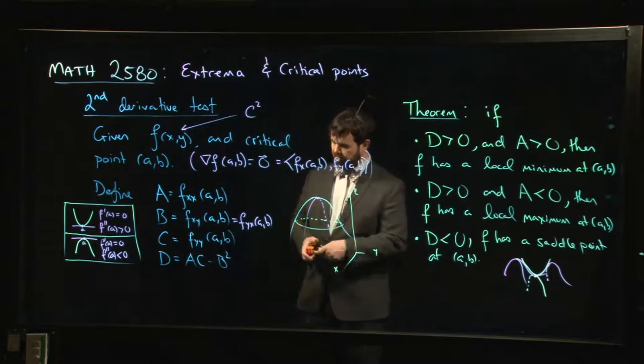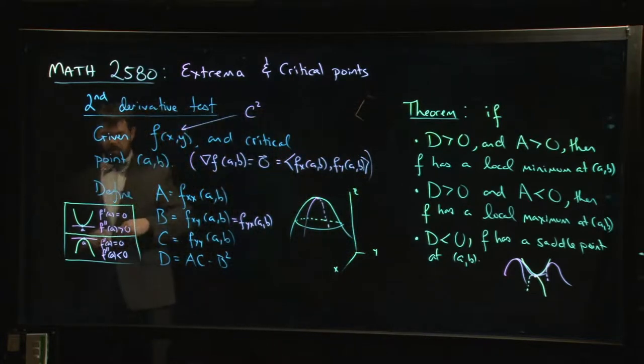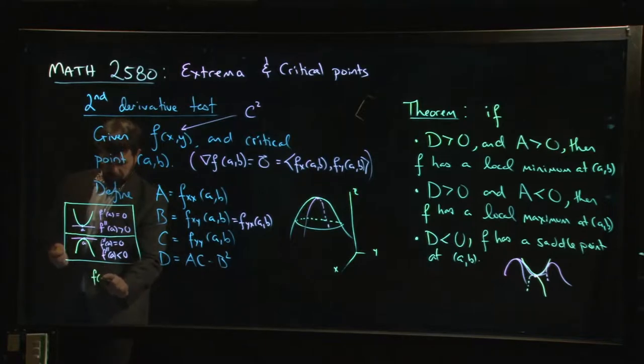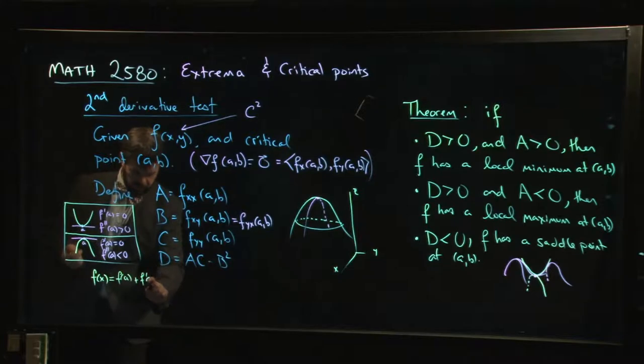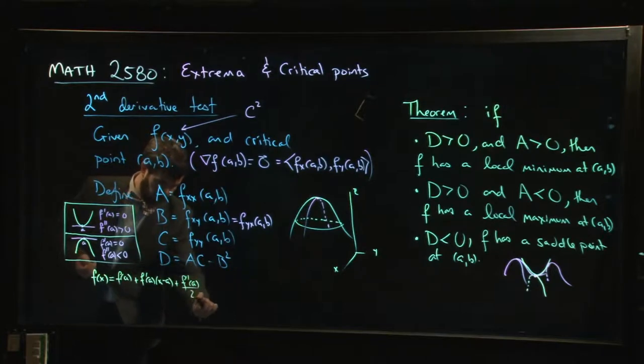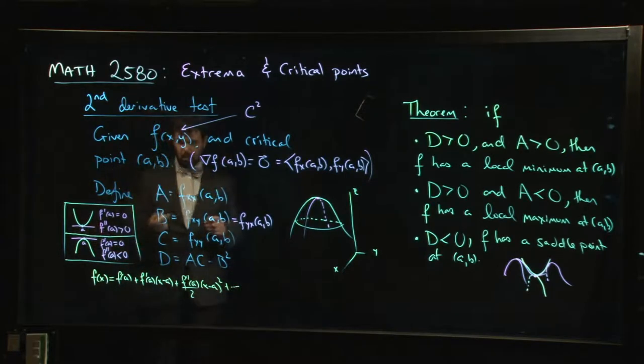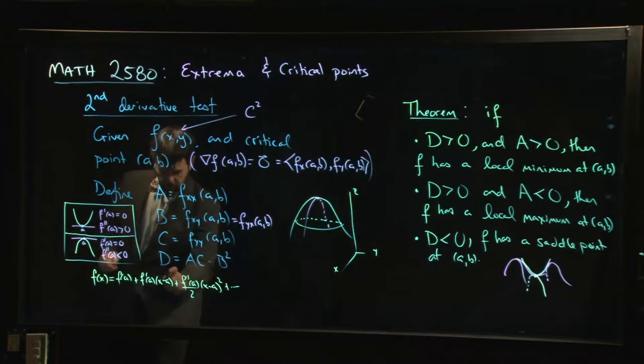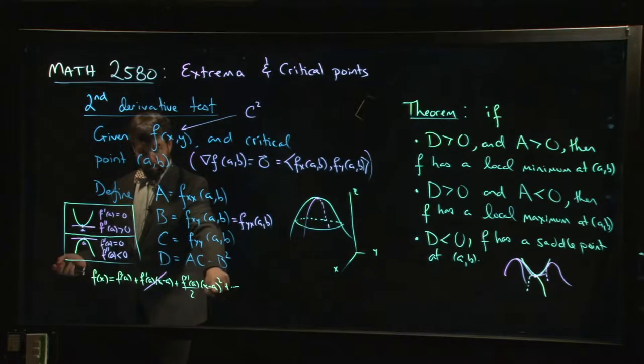If you want to understand why this is true, you extend the thinking that you do in one variable. So in one variable, the reason why this works is Taylor polynomials. We know that in one variable, and actually now you've been through Calc 3, you can even talk about Taylor series. And so you know that F of X you could write as F of A plus F prime of A times (x minus a), and then F double prime of A over 2 times (x minus a) squared plus higher order terms. And then more to the point, if you're at a critical point, F prime of A is zero, then that term is gone because you're at a critical point.